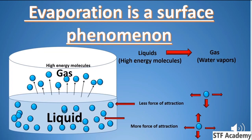Evaporation is a surface phenomenon. Students, this is a short question and MCQ topic: which factors affect evaporation? One major factor is the surface area. The greater the surface area, the higher the rate of evaporation. Surface area affects evaporation but it does not directly affect vapor pressure.